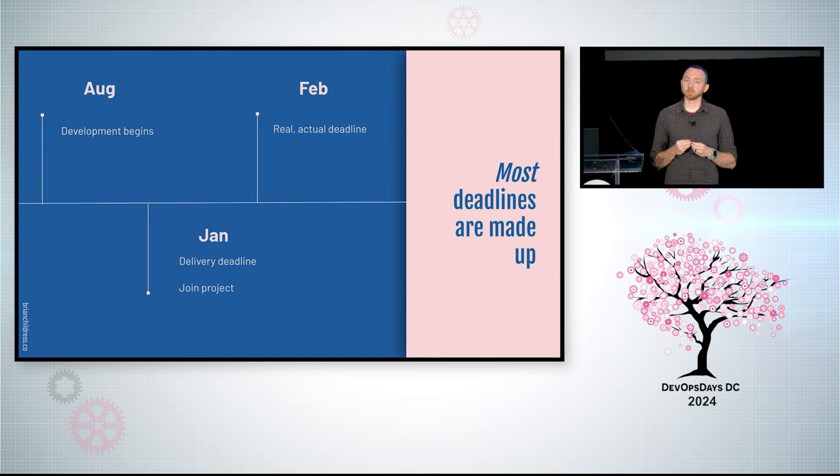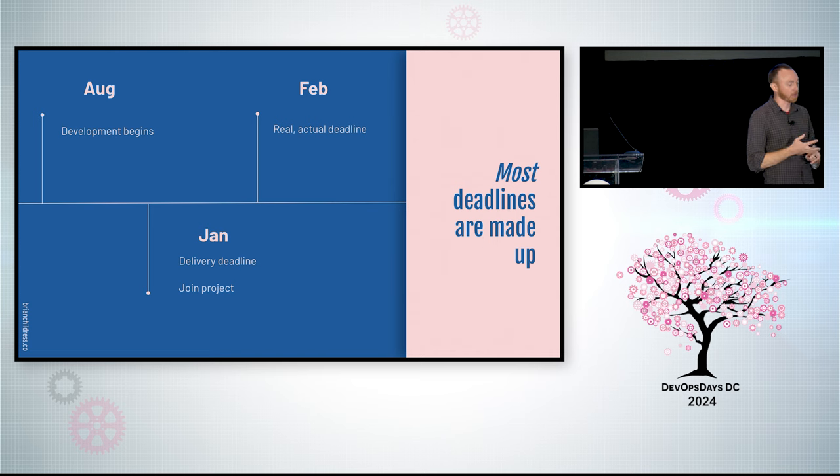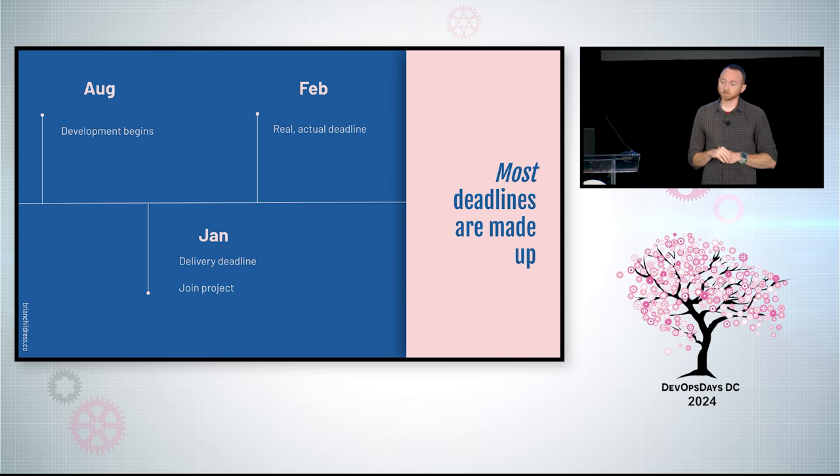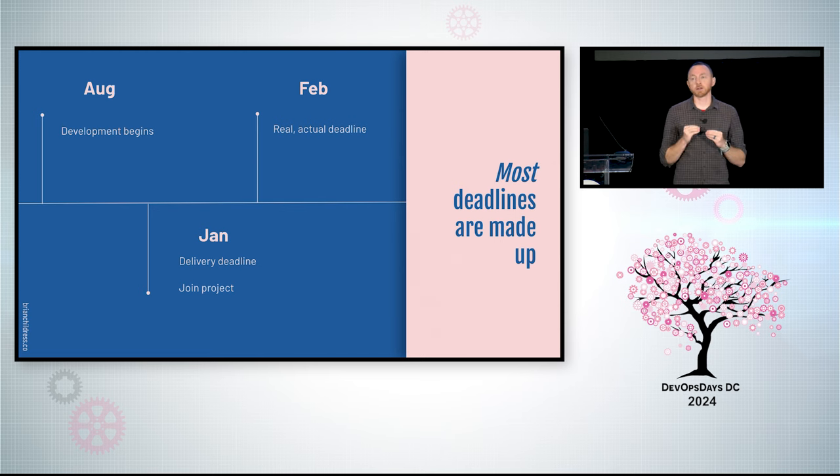The project actually began in August. Development began, we started picking technologies, and in January of the next year is when I joined the project. And when I joined, nothing was working. We had a team spread across the globe. We had all sorts of technologies in place that we didn't need, and nothing was working. And we had to deliver in the beginning of February. We had three weeks. When I came into the project, I looked, and it was like somebody went down the AWS console, like it was a sushi menu, and just picked out everything. We had DynamoDB, we had Kafka Streaming, we had all sorts of services I didn't know AWS offered. But we did that because they received guidance of, we need to build this to scale. And so they went through and they brought in all these complex technologies, all these different platform services from AWS. And they had no idea how to use any of them.